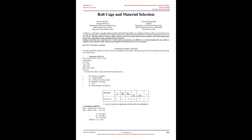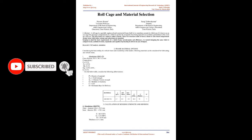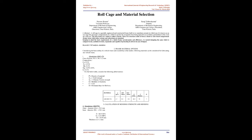Frame Material Options: Considering the basic utility of a vehicle frame and availability in the market, the following materials can be considered for fabricating the vehicle frame. Material I: Aluminium 6063-T6, cross-section 38.1 × 36.1 × 2 mm.